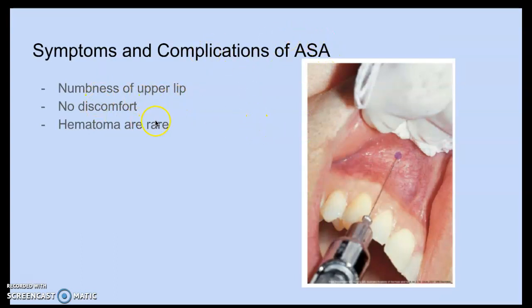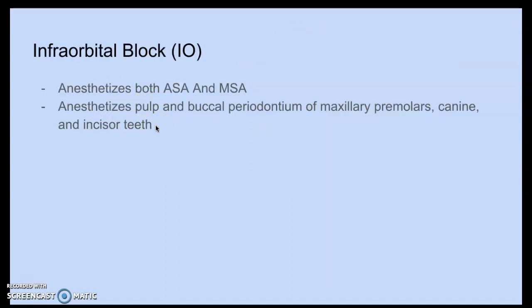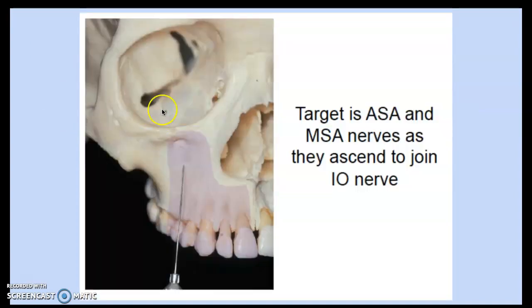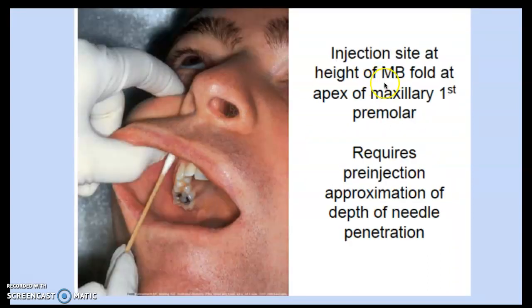The ASA injection site is at the height of the mesial buccal fold at the apex of the canine, anterior and parallel to the eminence. Symptoms are the same as the MSA: numbness of the upper lip, no discomfort, and hematomas are rare. The infraorbital (IO) block anesthetizes both ASA and MSA, as both nerves meet at the infraorbital foramen, covering the pulp and buccal periodontia of the maxillary premolars, canine, and incisor teeth.